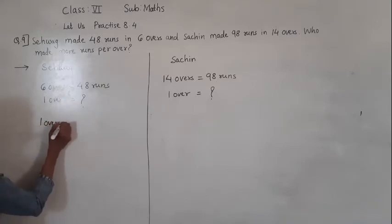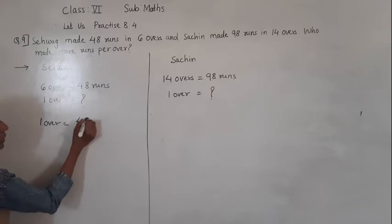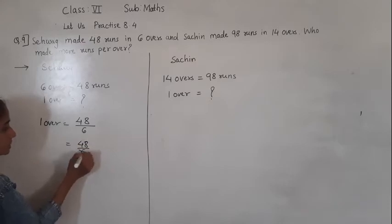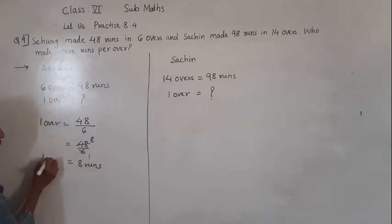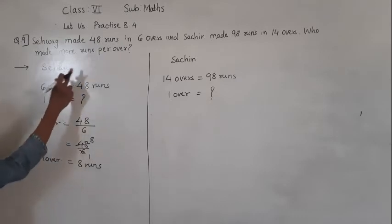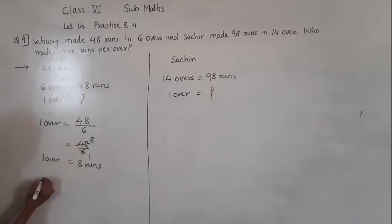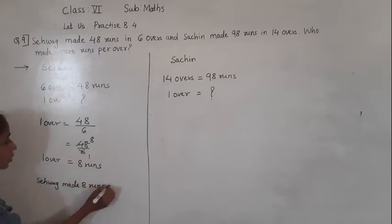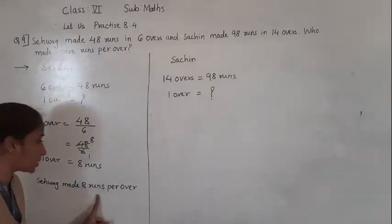So for 1 over: 48 runs divided by 6. 6 eights are 48, so 8 runs will come. In 1 over, 8 runs. So Seva made 8 runs per over.